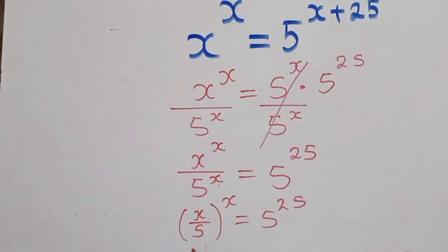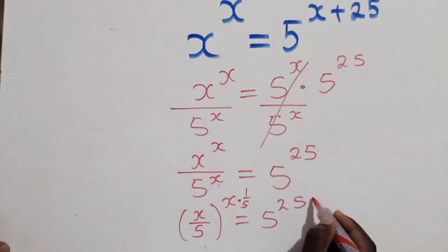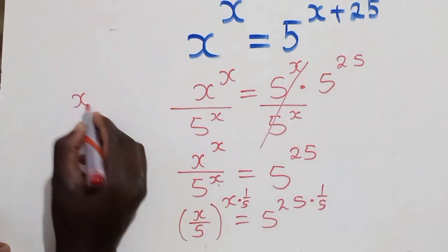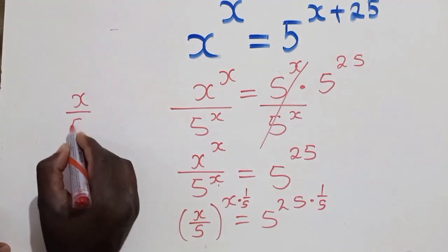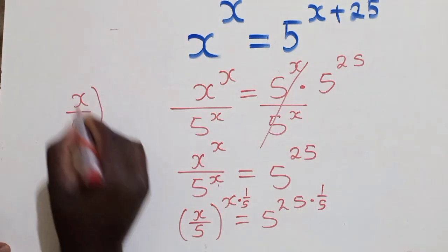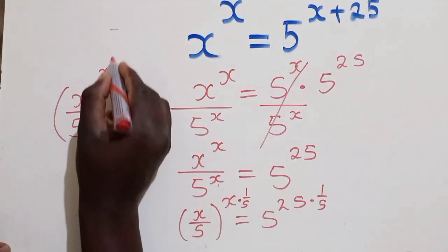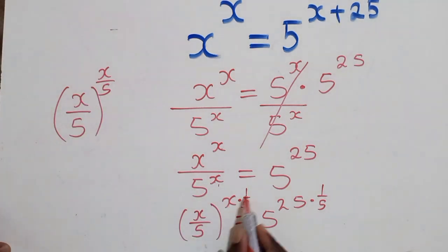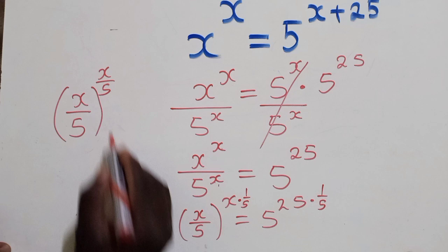Applying the laws of indices. Now, from this stage, we can now multiply by 1 over 5 both sides, even this side, 1 over 5, of which this side, it will just be x over 5 power x over 5. So this x will come right here, where 1 is.